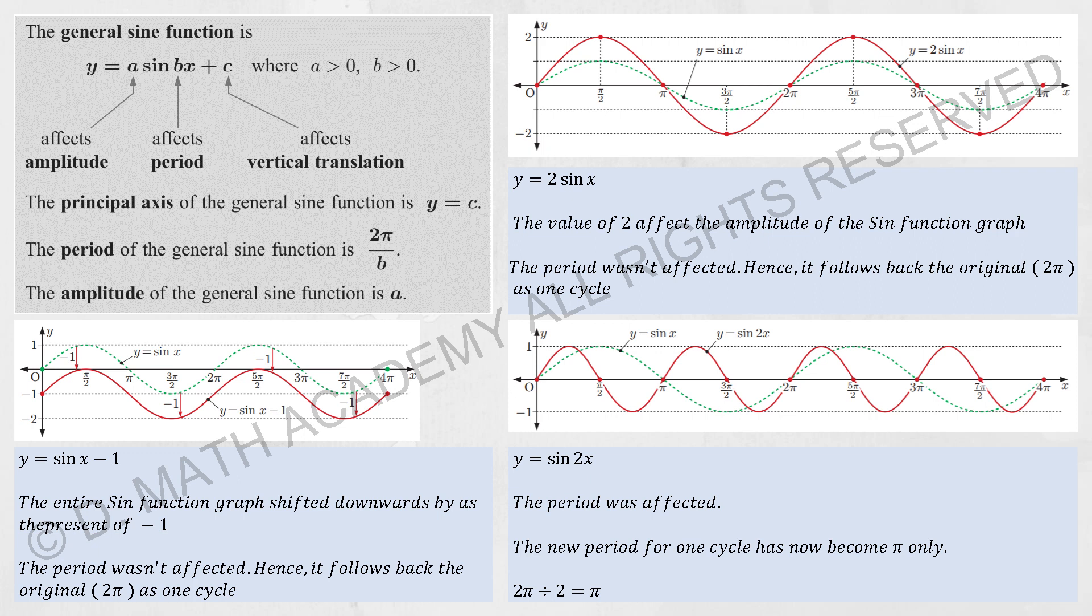The next one we have when your vertical translation c is negative 1, y equals to sine x minus 1. What this means is that the intersection point is still the same. However, the entire thing was being shifted down by one row.